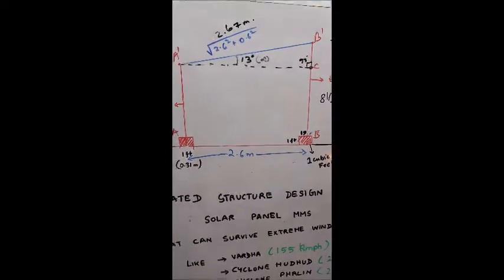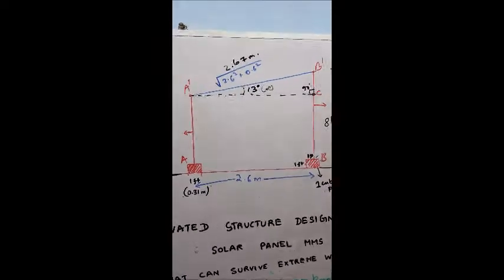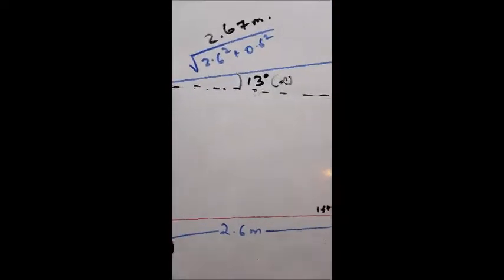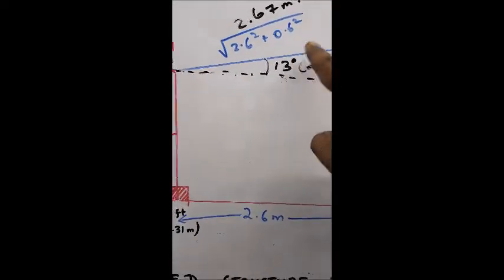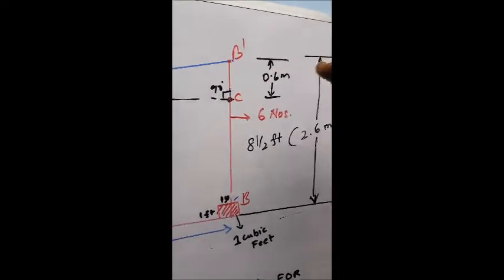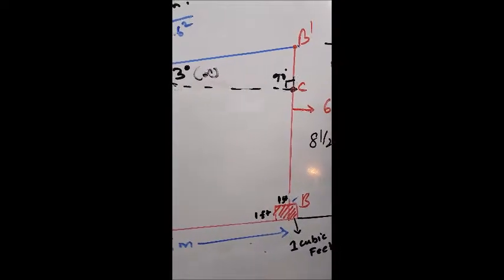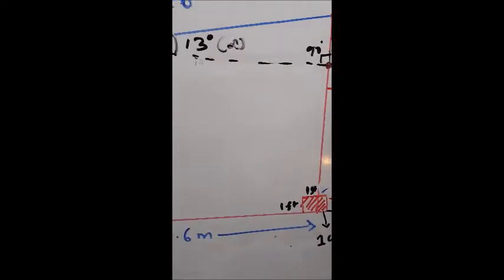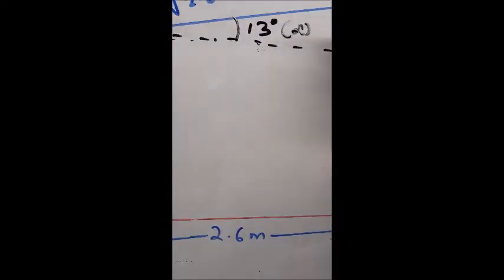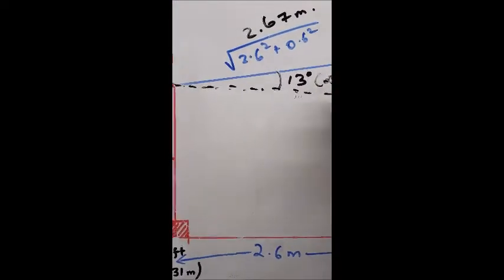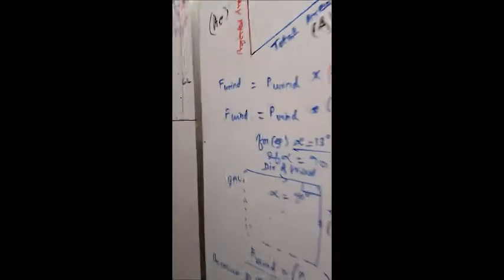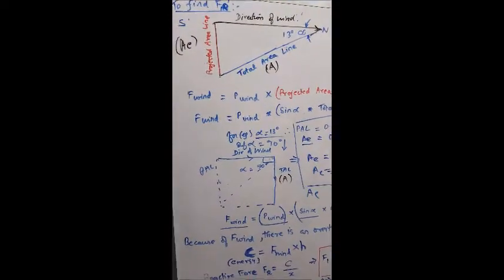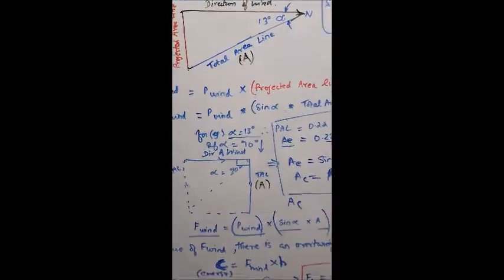What we are looking at is a wind that can tackle these panels and tilt these panels over. That wind has to be coming and hitting us in this direction, and that is when the maximum pressure on these panels is applied. How do we overcome that situation is the real question.